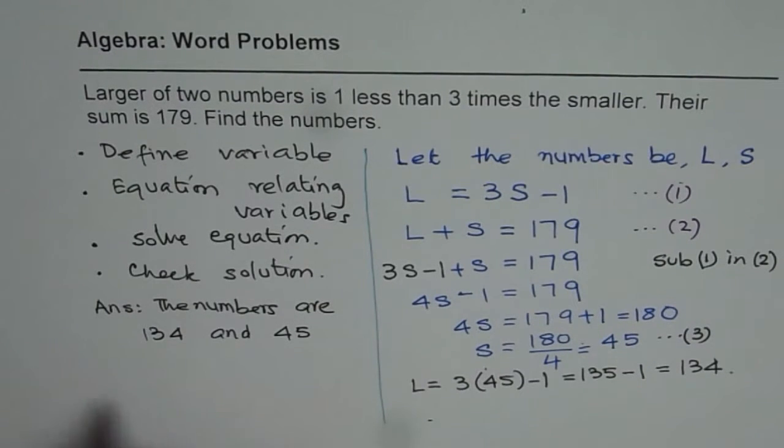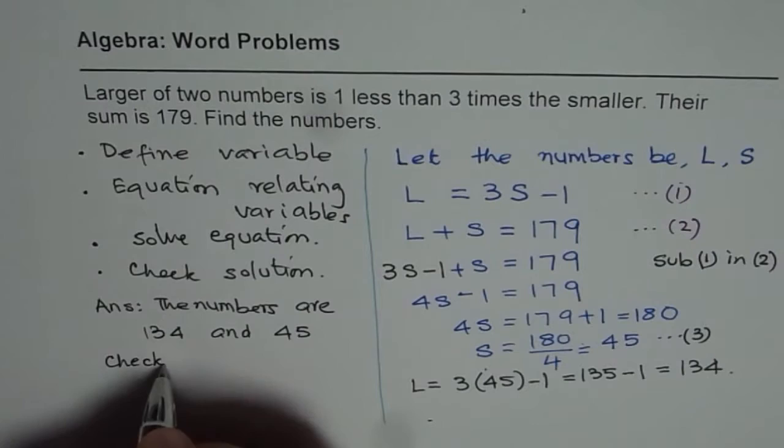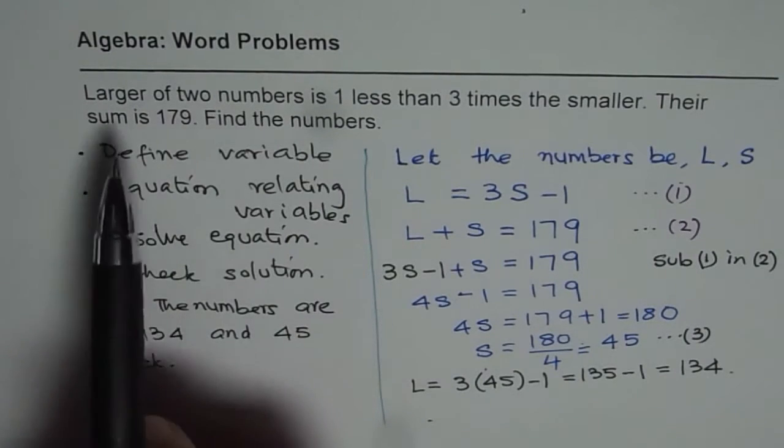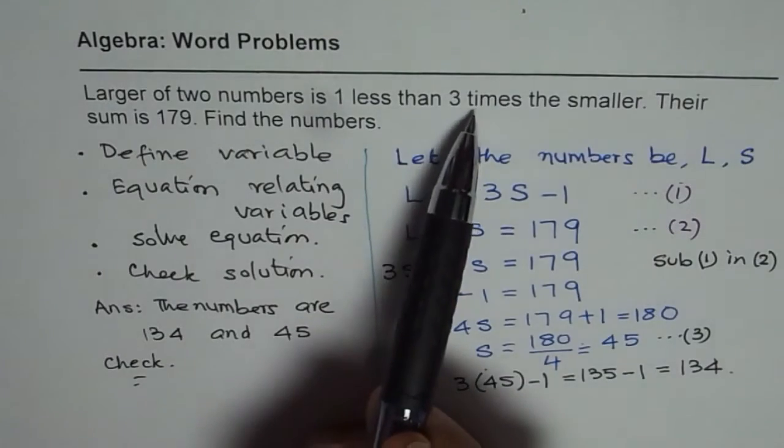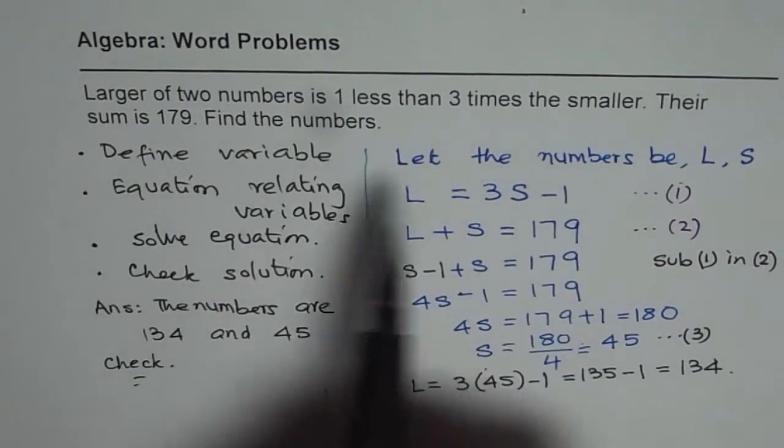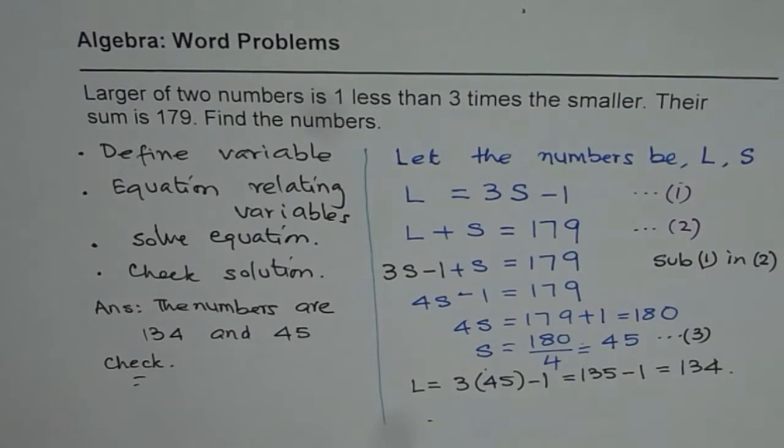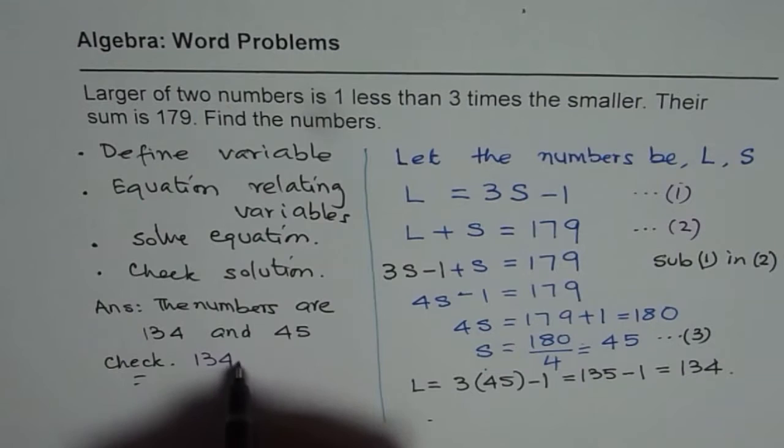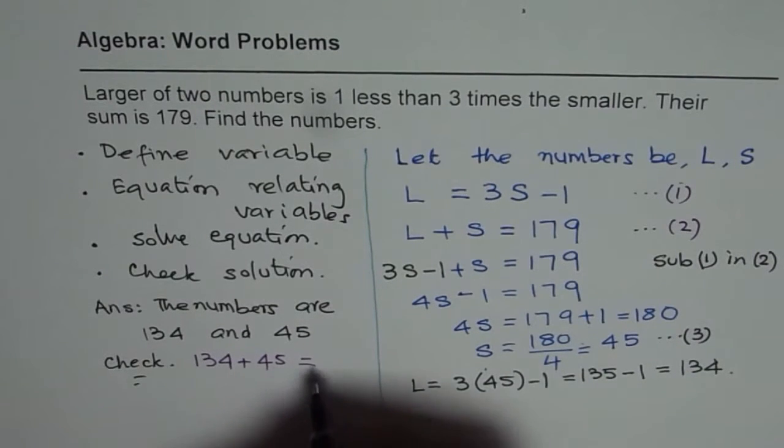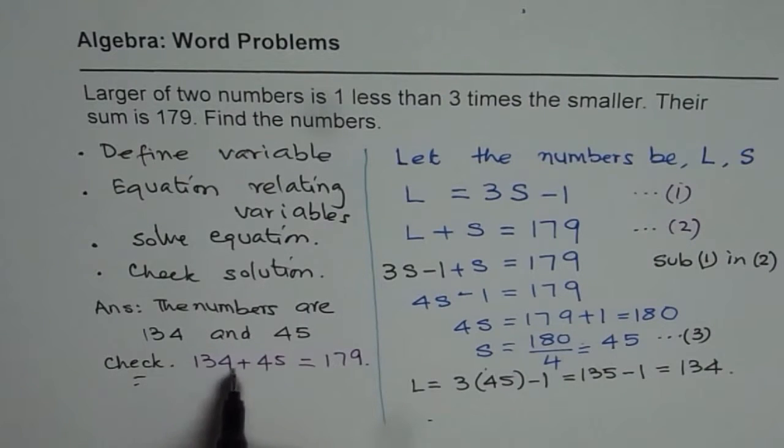Now let us check our solution. The check is we will see if they satisfy our condition. Larger of the two numbers is 1 less than 3 times the smaller, and the second condition is their sum is 179. First is 134 + 45, that indeed gives us 179. And 134 is 3 times smaller minus 1, so that is already satisfied. That helps us to complete the solution of a word problem, and we are very sure that the method adopted is perfectly fine and results in the correct answer.